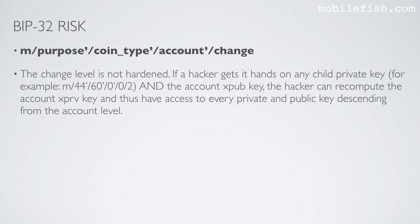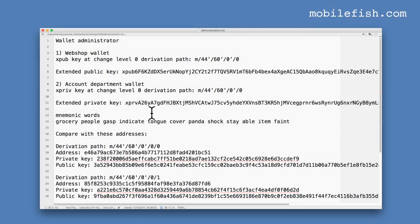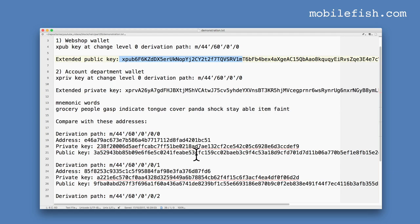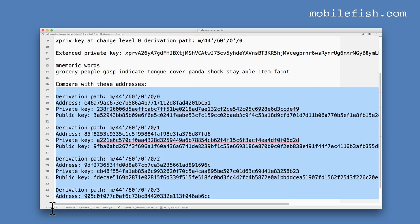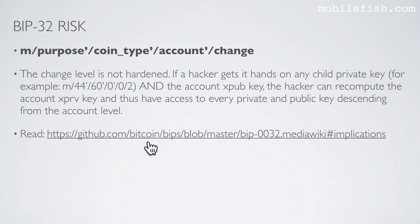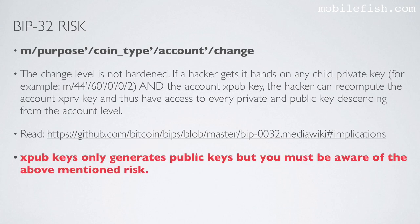The change level is not hardened as you can see here. If a hacker gets his hands on any child private key, for example this key, and the account extended public key, the hacker can recompute the account extended private key and thus have access to every private key and public key descending from the account level. If a hacker gets the extended public key and one of these private keys, then the hacker can recompute this extended private key, which means the hacker has access to all these addresses. For more information about this risk, go to this link. Extended public keys only generate public keys, but you must be aware of the above mentioned risk.